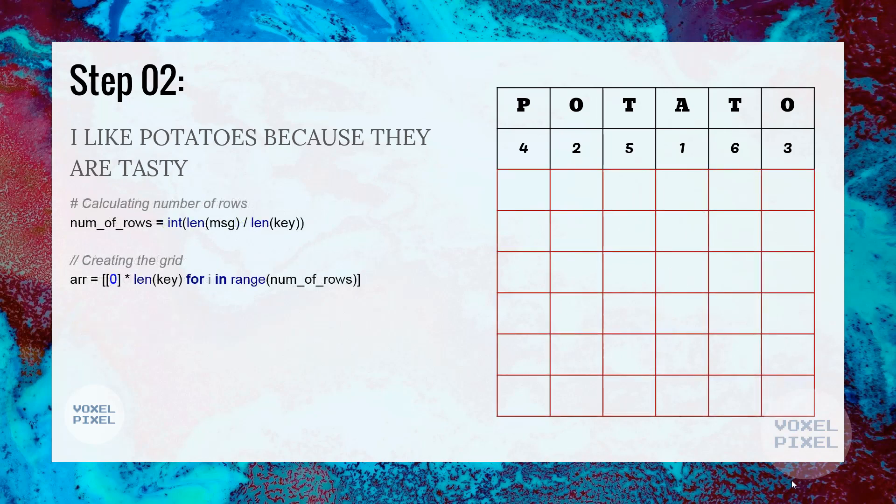Next, we will determine size of the grid. For that, we will first calculate the number of rows and we can obtain that by length of the message divided by length of the keyword.